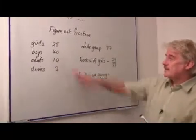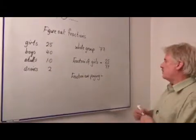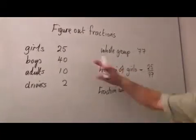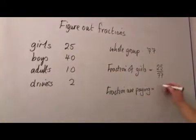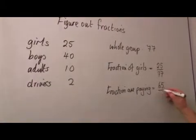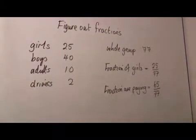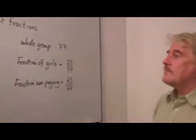So, in fact, twelve of the people going will not be paying. So, sixty-five out of seventy-seven, or sixty-five seventy-sevenths of the group, will actually be paying for the trip.